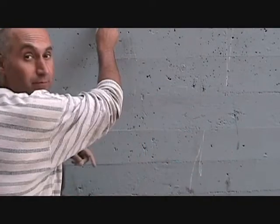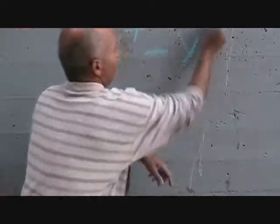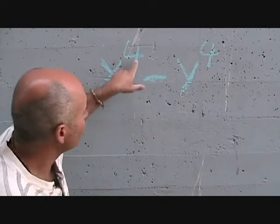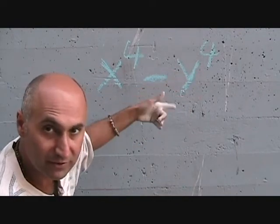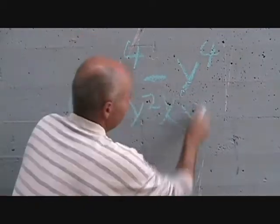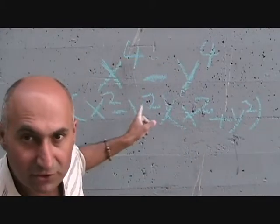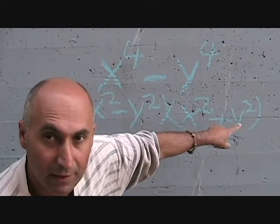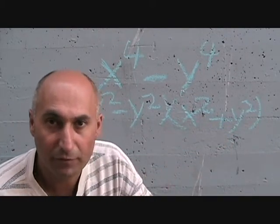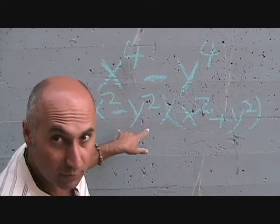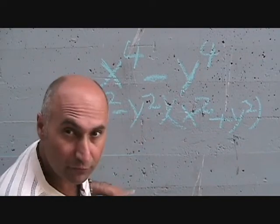Any two things subtracted from each other, you can factor. So let's start with x to the power 4 minus y to the power 4. Factoring this gives x squared minus y squared, times x squared plus y squared. Now, any two things subtracted from each other, we can continue factoring. So we can continue factoring the first bracket further — you could go on factoring forever, really.